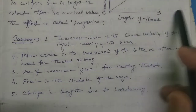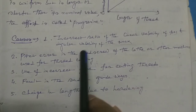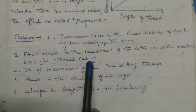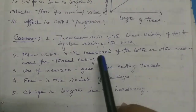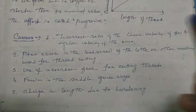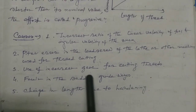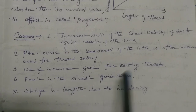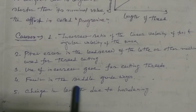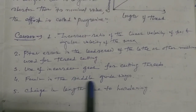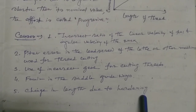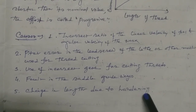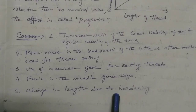Other causes of progressive error include: errors in the pitch of the lead screw of the lathe; use of incorrect gears for cutting the thread causing gear engagement problems; fault in the saddle guideway; and change in length due to hardening after thread cutting. These are the causes of progressive error.